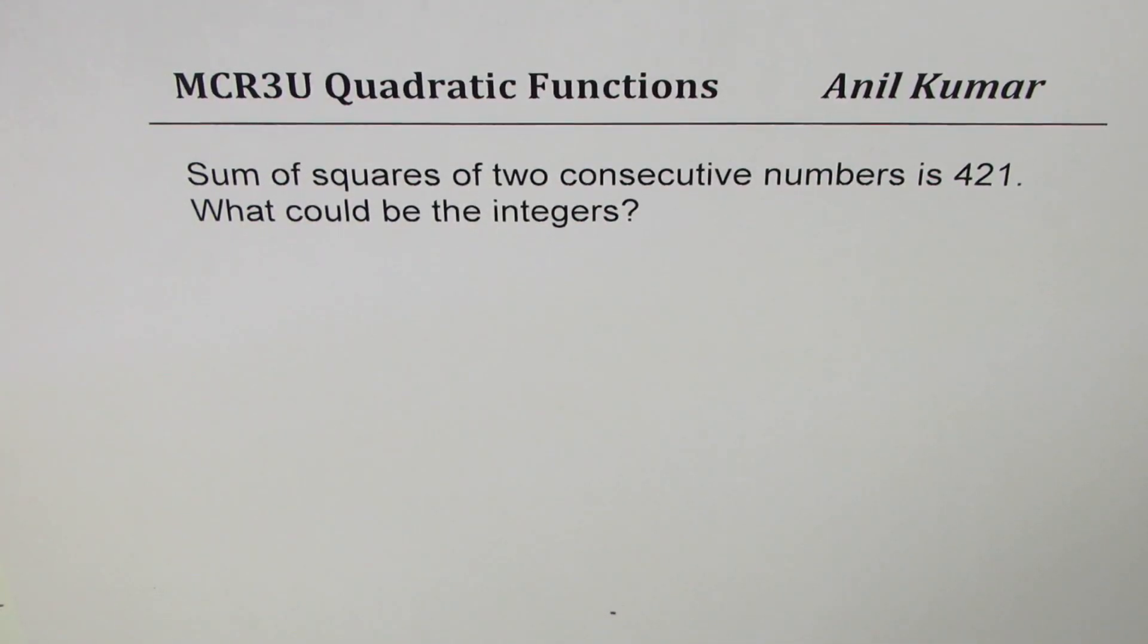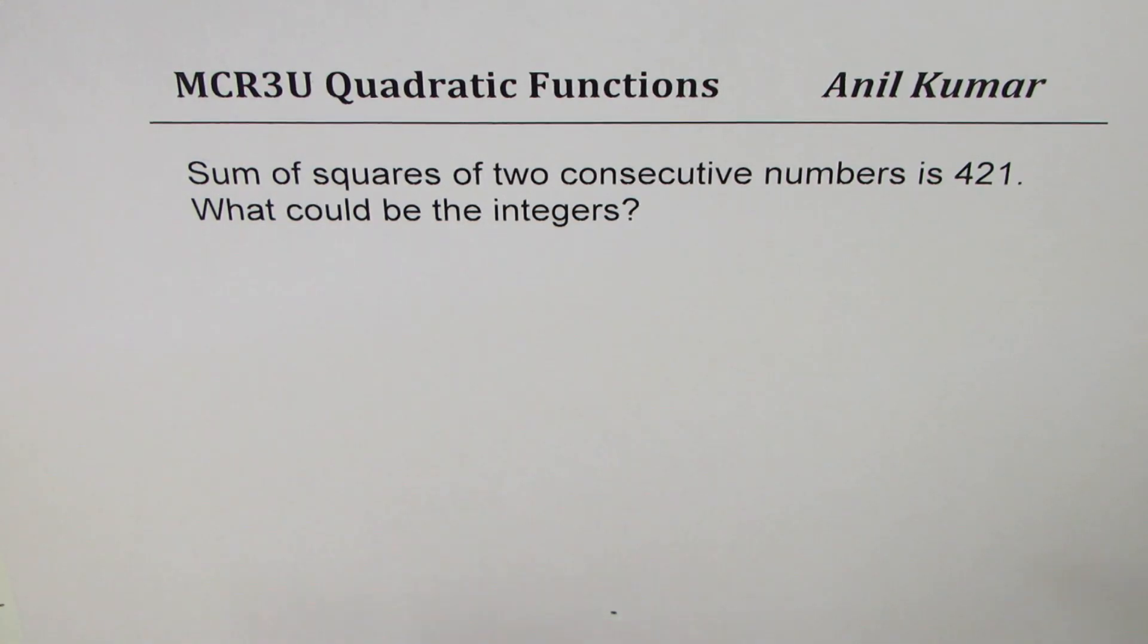I'm Anil Kumar and here is the next question based on the test paper of quadratic functions. The question here is: sum of squares of two consecutive numbers is 421, what could be the integers?